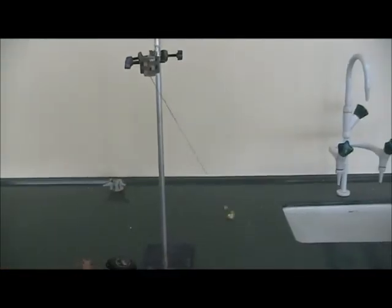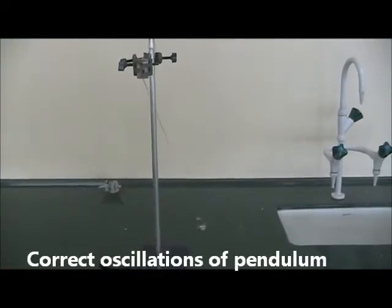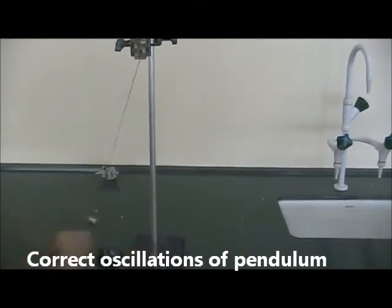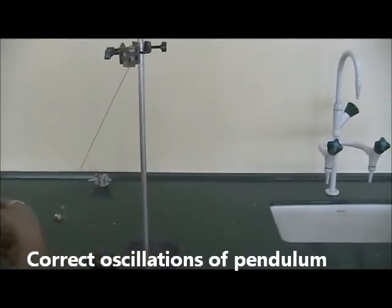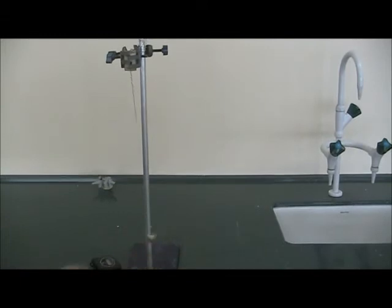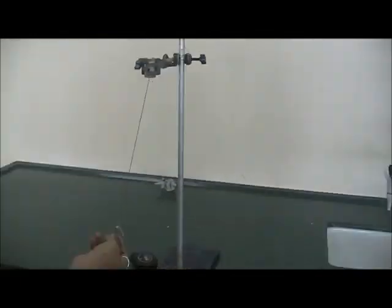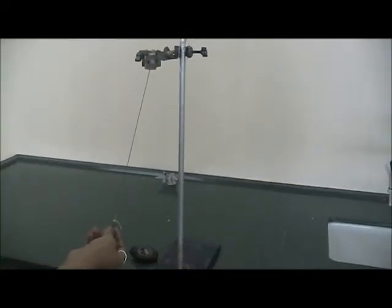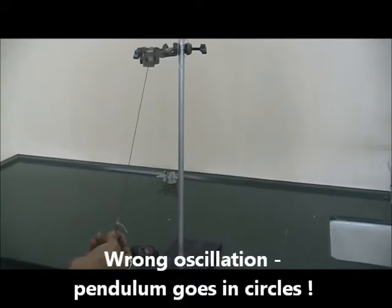A correct oscillation is when the pendulum actually swings on the same plane, like this. A wrong way of oscillation would be when the pendulum goes in circles.